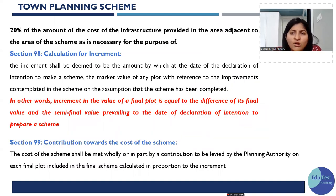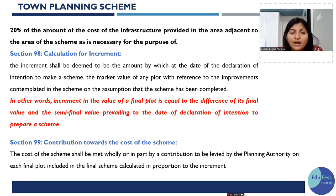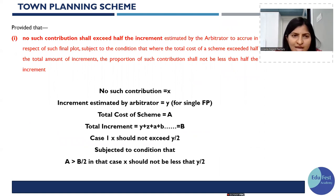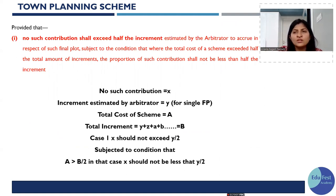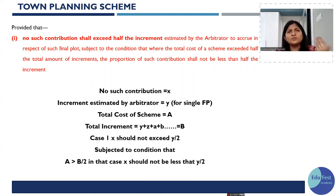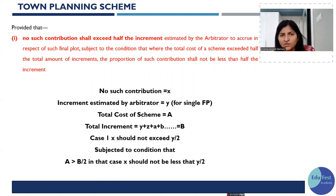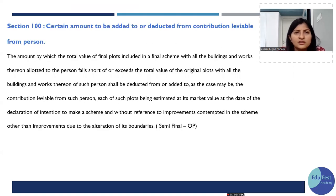The increment is the difference between the final value and the semi-final value. Contribution: if the total cost of the scheme exceeds half the amount of increment, the contribution taken from owners should still be less than 50% — it could be 30%, 35%, or 40%. But if the total cost of the scheme exceeds half the increment, the maximum contribution that can be taken from the owner is still capped at 50%.